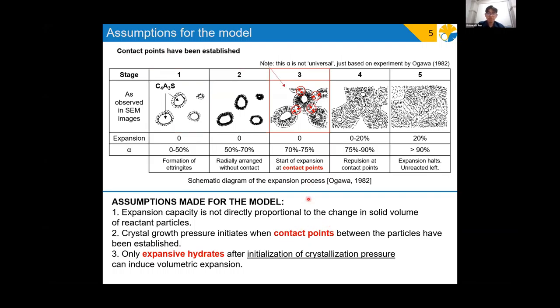Secondly, the expansion phenomena would be based on crystallization pressure, which its initiation begins once some sort of critical stiffness is achieved. Once the contact point has been established and the paste skeletons possess minimum stiffness, repulsion due to crystallization pressure would appear at the contact points and then it would start to push the skeleton apart from each other to make the expansion.